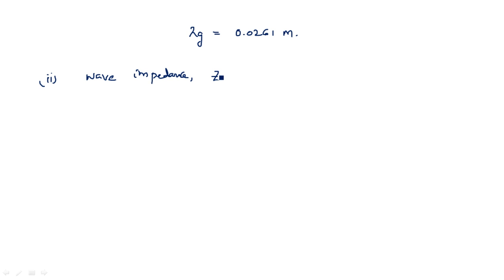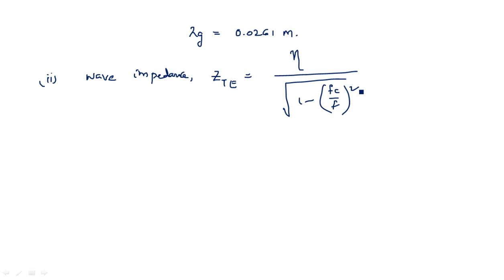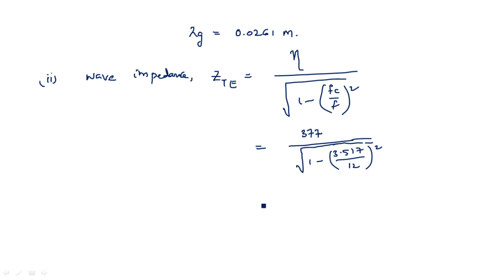The third parameter is wave impedance. Since we are in TE mode — the dominant mode TE11 — Zte equals eta divided by square root of 1 minus (fc/f) squared. Eta is 120π or 377 ohms. Substituting 3.517/12, after simplification Zte equals 394.35 ohms. These are the three parameters calculated for the circular waveguide problem.